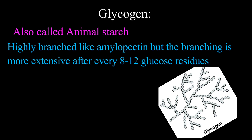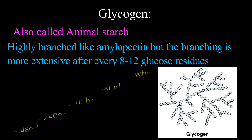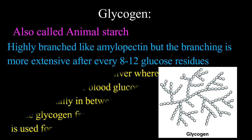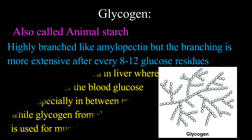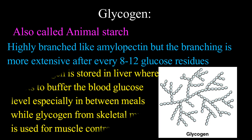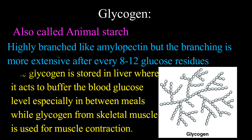Glycogen is also called animal starch. It is highly branched like amylopectin, but the branching is more extensive, occurring after every 8 to 12 glucose residues. Glycogen is also more compact than starch. Glycogen is stored in the liver, where it acts to buffer the blood glucose level,